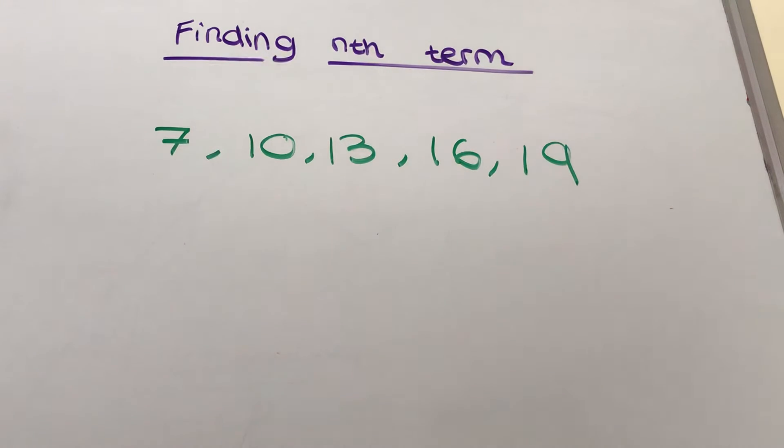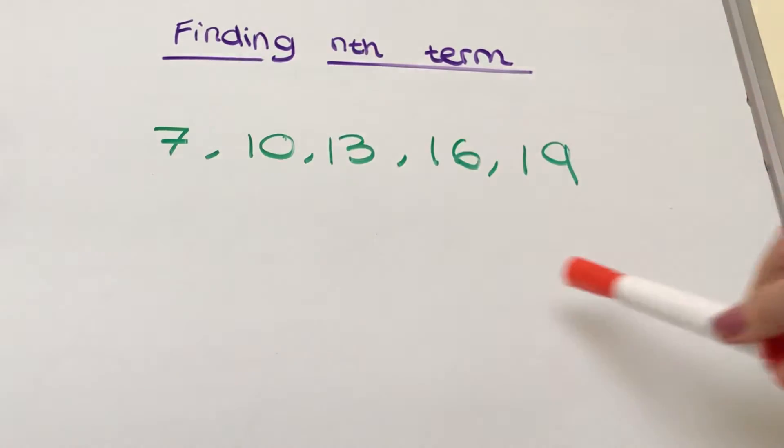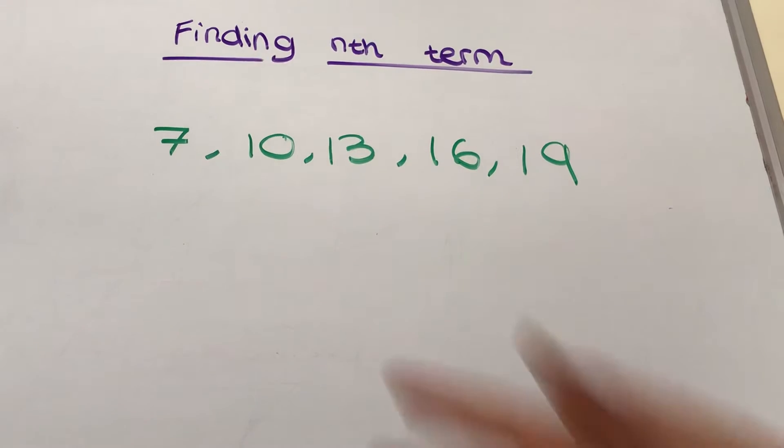So here we have a sequence or a pattern, and in order to find out the nth term there are a few things we need to do. The first thing I want to do is look at the gaps between all these numbers. So essentially, how am I going from 7 to 10 and 10 to 13 and so on.